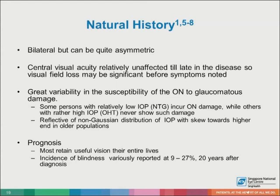Primary open angle glaucoma is often bilateral, but can be quite asymmetric. Central visual acuity is relatively unaffected until late in the disease, so visual field loss may be significant before symptoms are noted. There is great variability in the susceptibility of the optic nerve to glaucomatous damage — some people with relatively low intraocular pressure, such as in normotensive glaucoma, can incur significant optic nerve damage, while others with rather high intraocular pressure, such as in ocular hypertension, never show such damage. Most patients retain useful vision their entire lives if treated appropriately, with blindness incidence variously reported at about 9% to 27% twenty years after diagnosis.